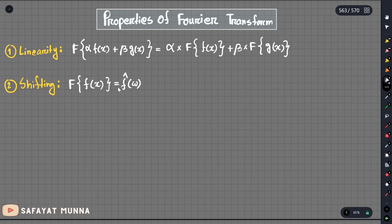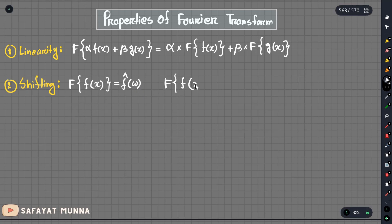We need to know the Fourier transform of f(x), which is f-hat of omega. We need to know the Fourier transform of f(x minus a). This is the Fourier transform of f-hat of omega. This is our first shifting property.